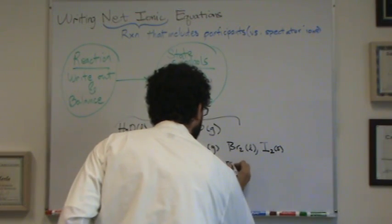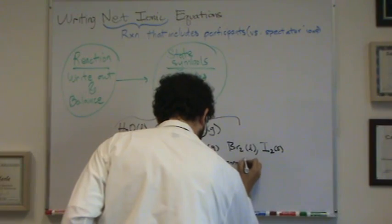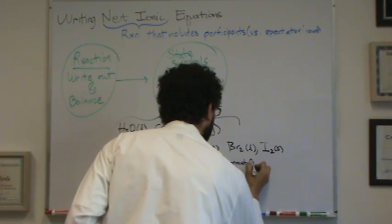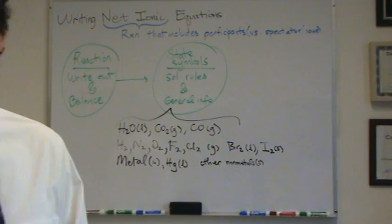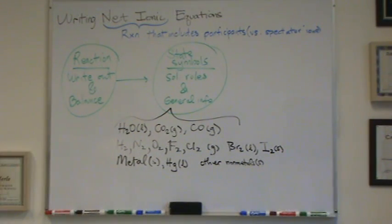Other non-metals are often solid. So, if it's not listed here, so like nitrogen, oxygen, fluorine, those are non-metals. Other non-metals tend to be solids. So, there's very few gases on the periodic table.